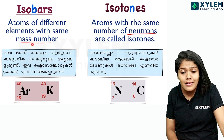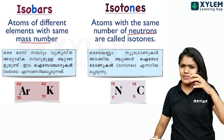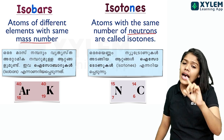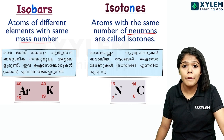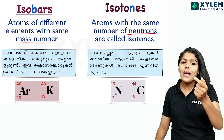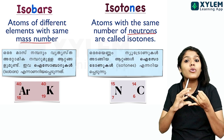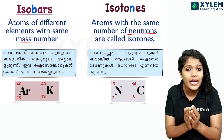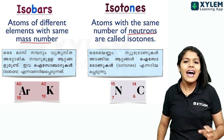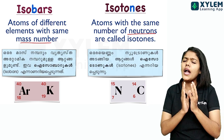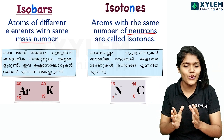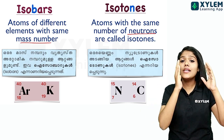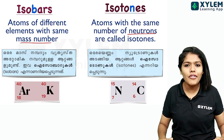So to recap: isotopes — same number of protons (P), atomic number is the same. Isotones — same number of neutrons (N). Isobars — same mass number, meaning the sum of protons and neutrons is the same. This trick will help you never forget these definitions in your exam.